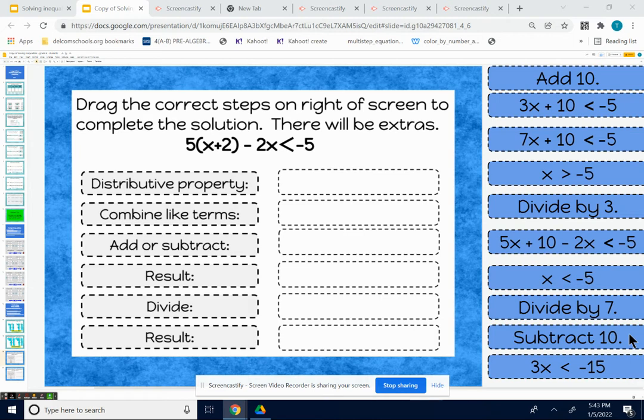I'm going to go ahead and go over the solution. So we have 5 times x plus 2 minus 2x is less than negative 5. These are the steps that I've been having you use to solve these types of problems.